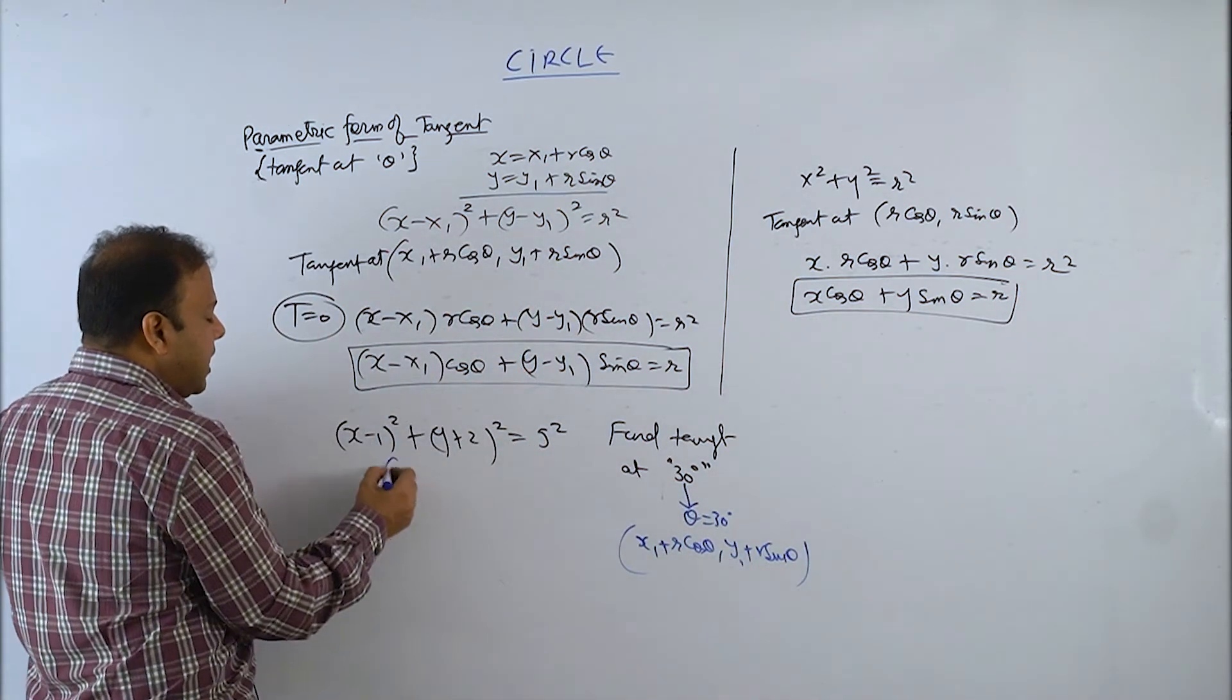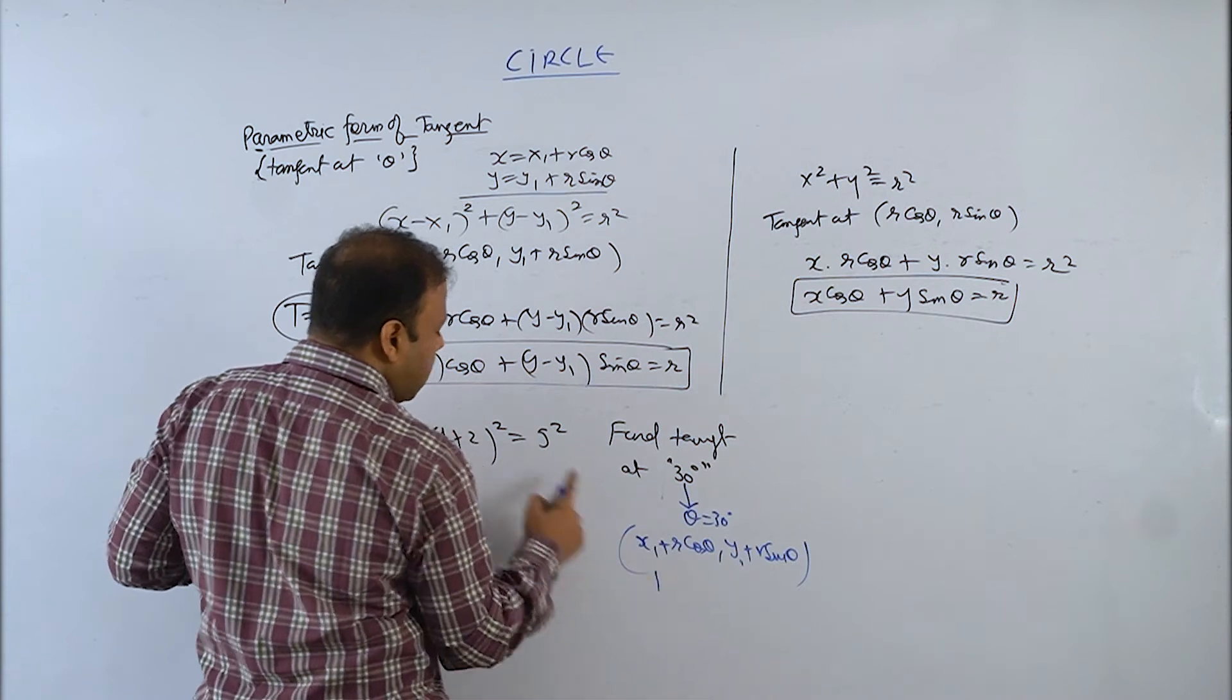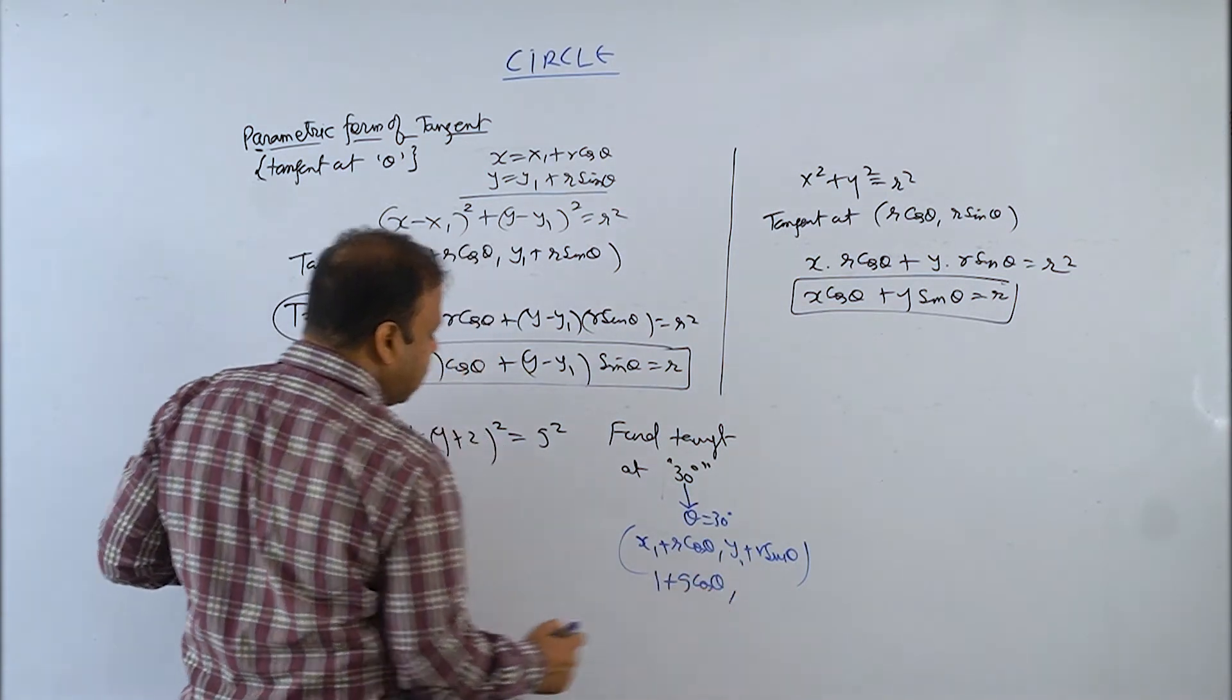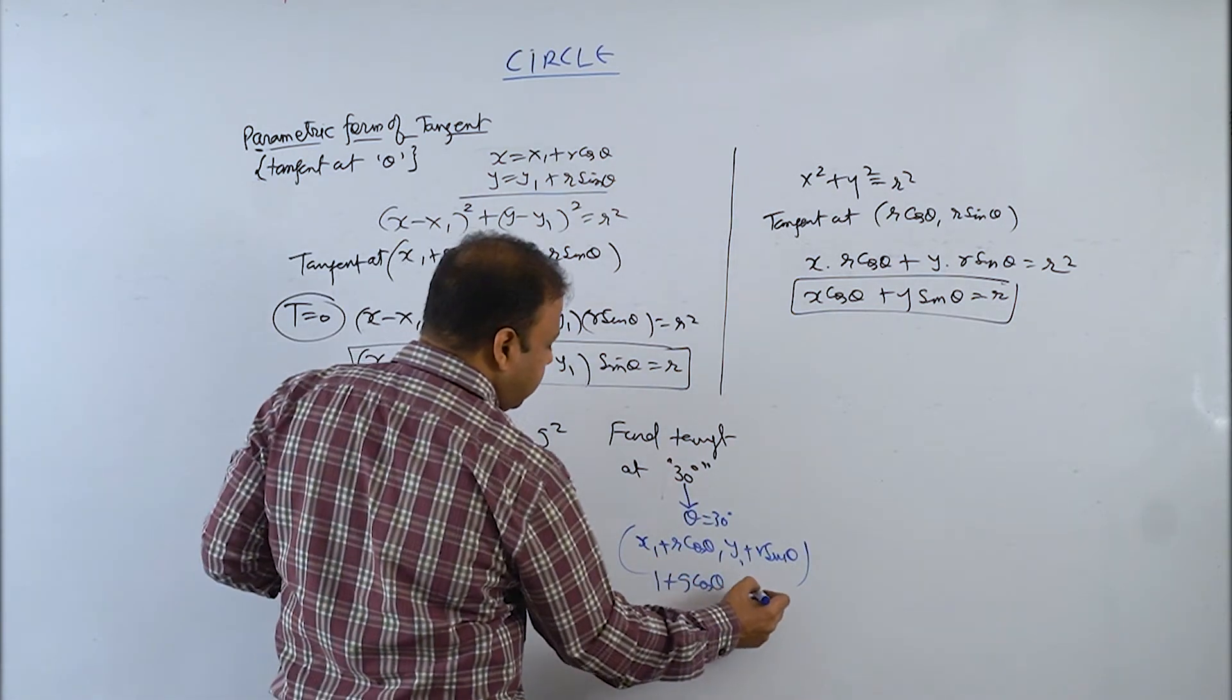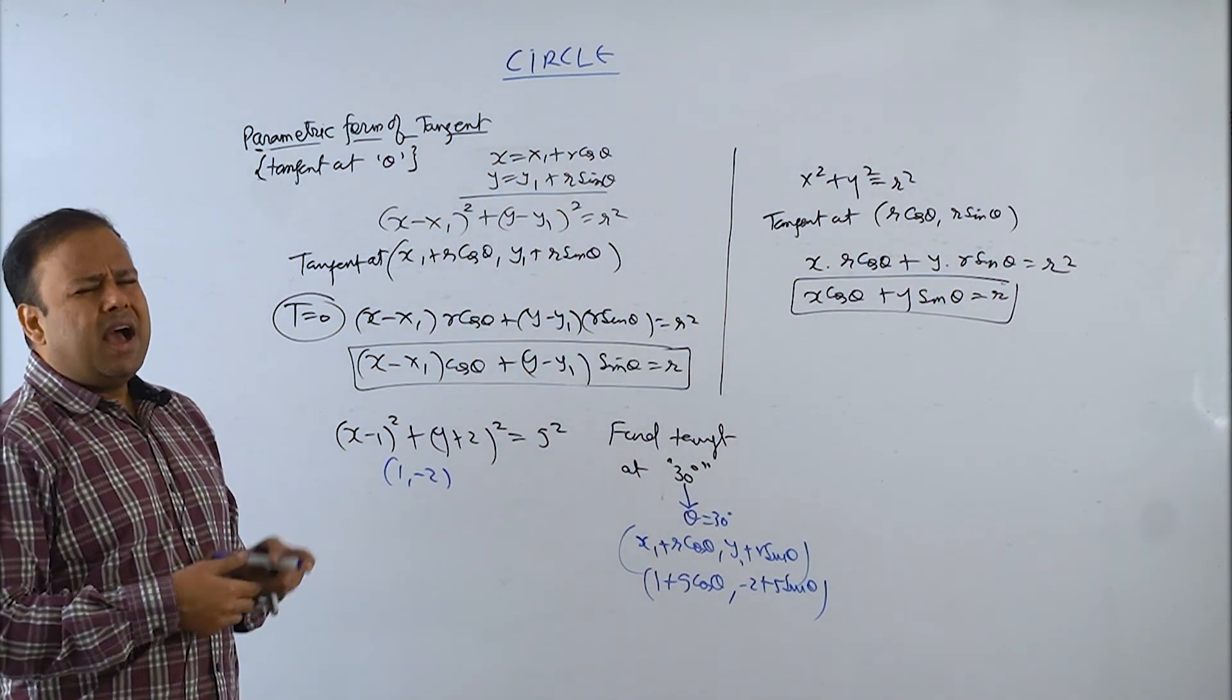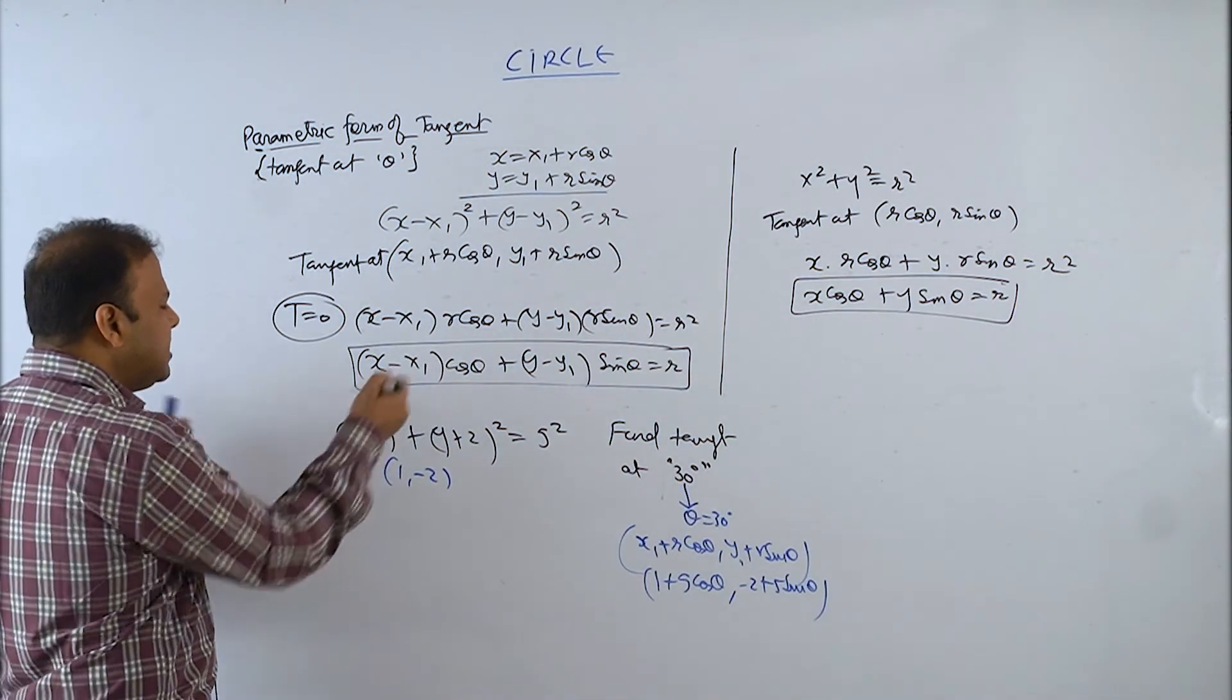What is x1, y1? It is 1, minus 2. And what is r? It is 5. So 1 plus 5 cos theta and minus 2 plus 5 sin theta. That is the point. Actually no need, it's straightforward.